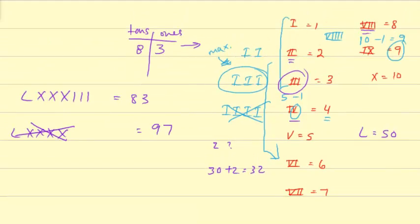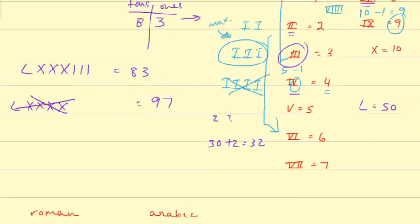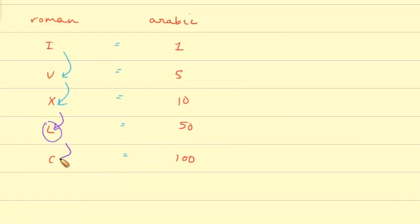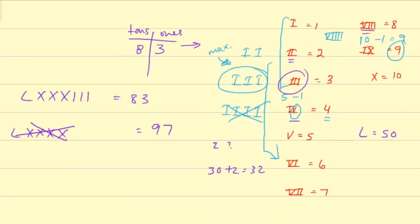So you would jump up to 100, which if we go down here, you'll see a C. And then you would just simply subtract 10 from there. Similar to how we did over here. We went here and we subtracted 1. Instead we're going to jump up to 100, and we're going to subtract 10 to get 90.